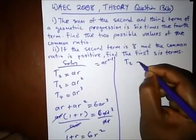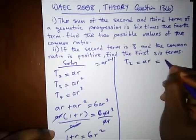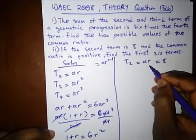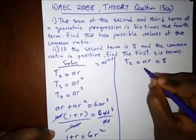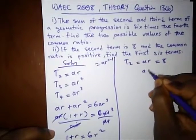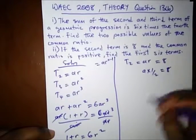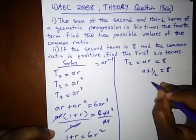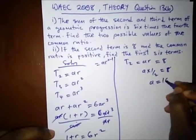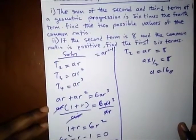Since T2 is equal to AR, and T2 is 8, where we know R as our positive value, we have A times 1 over 2 equal to 8. If we multiply, take 2 here, A is equal to 16. So our first term is 16.